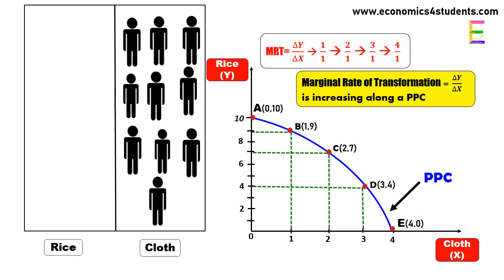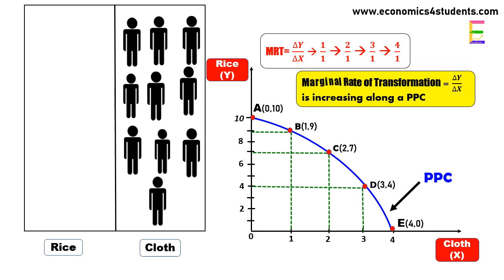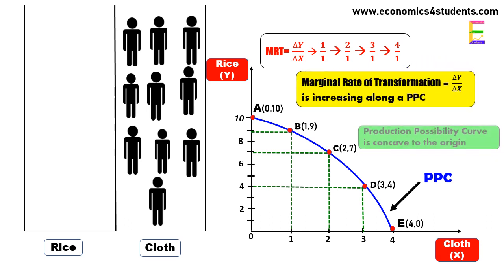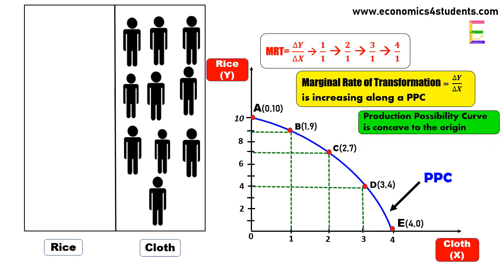Therefore, we can see that the marginal rate of transformation — that is delta Y by delta X — is continuously increasing along a PPC. Hence the production possibility curve is concave to the origin.